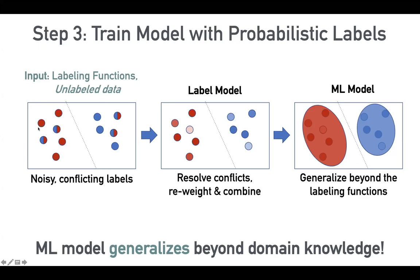When we write these rules, we might get conflicting labels for some data points, or no labels at all in case of abstains. The label model can give you training labels for data points, but only those that received at least one label from labeling functions. For example, an email from LinkedIn might not trigger any of our rules — it doesn't say 'need money' and doesn't mention family — so no label gets assigned, and the label model has no way to generalize.